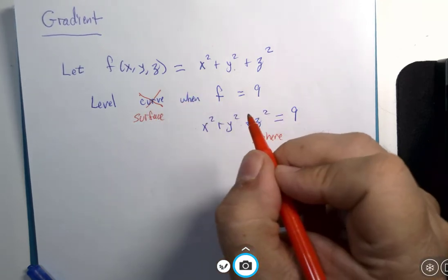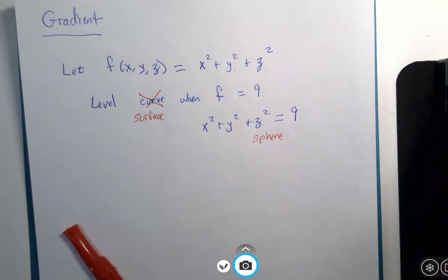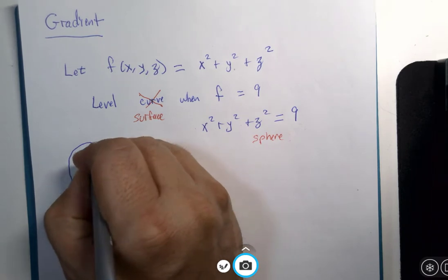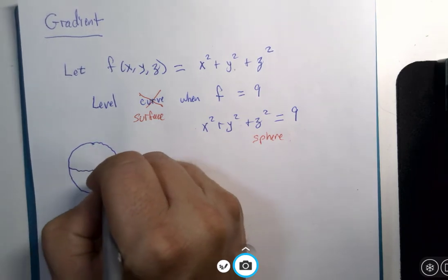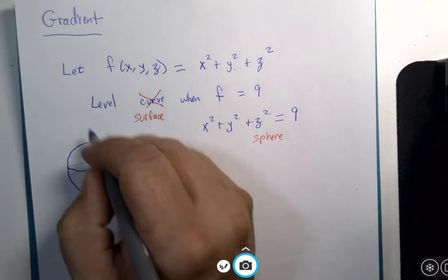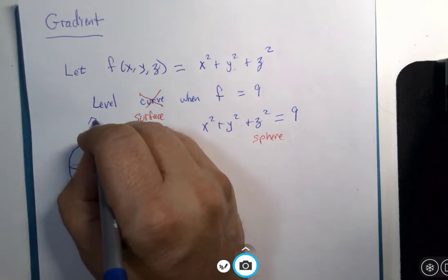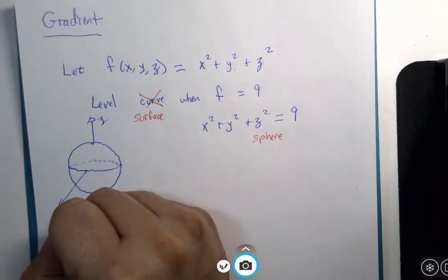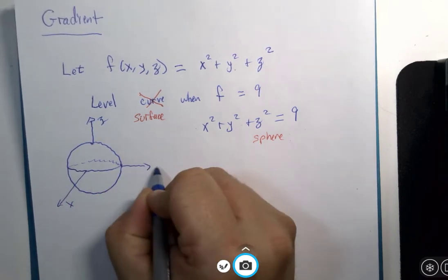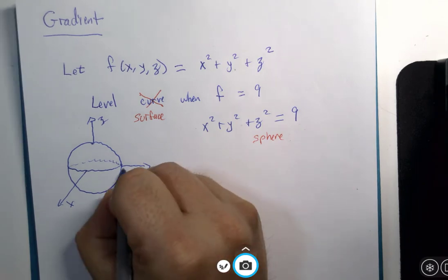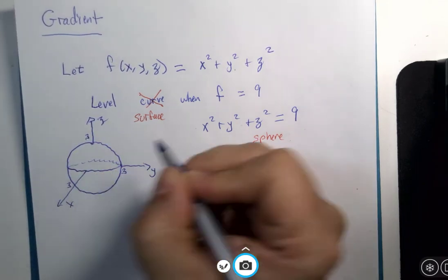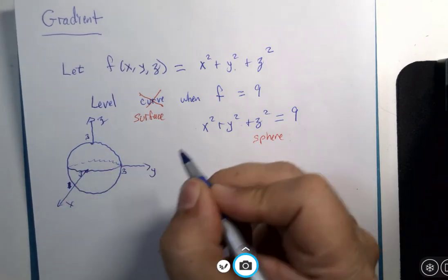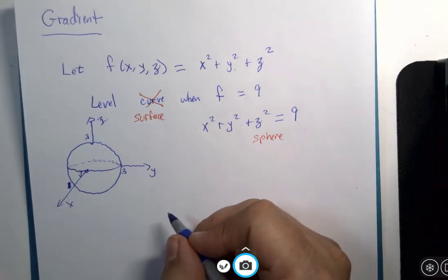So, this sphere, there is z, and there is x, and there is y, has a radius of three. Oops. That three should be here. Okay. Right there.